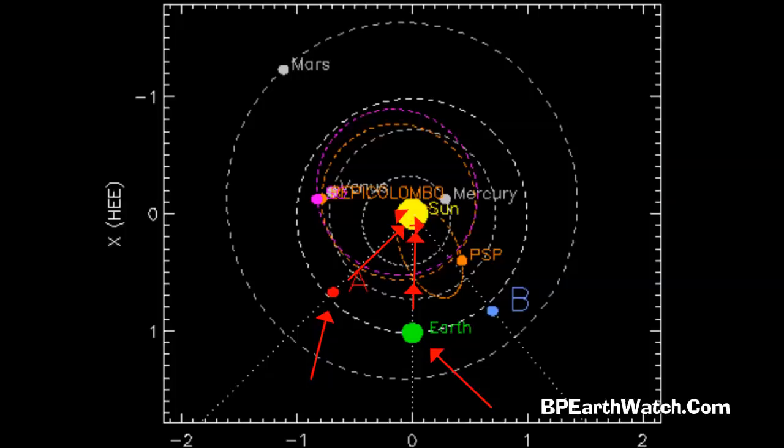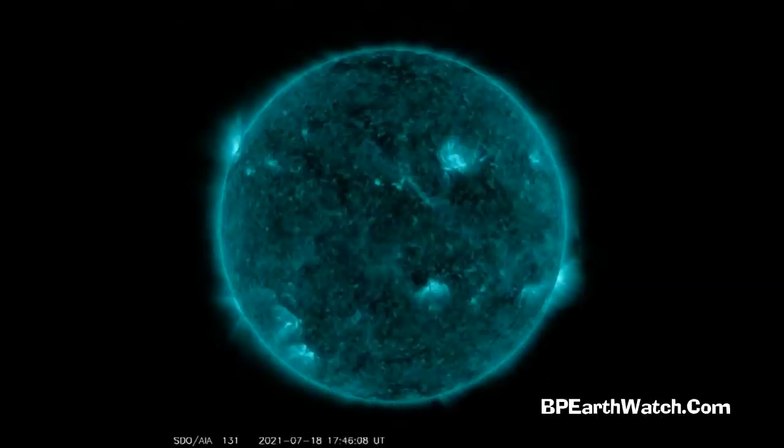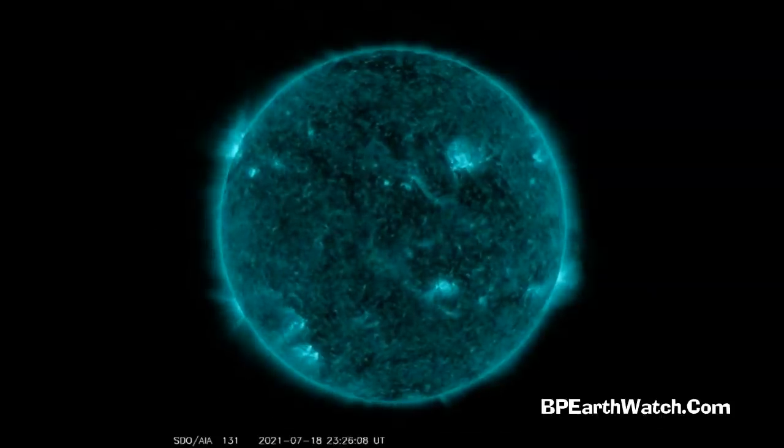Now remember, Mercury is in the gray dot to the right. Venus is in a gray dot to the left on the back side of the sun. Notice how close Mercury is, and we'll take a closer look at that.